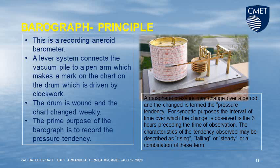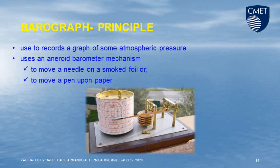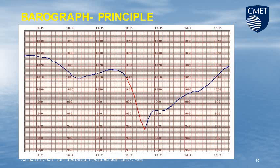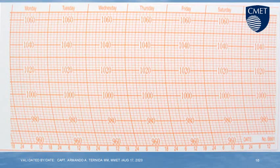For synoptic purposes, the interval of time over which the change is observed is the 3 hours preceding the time of observation. The characteristic of the tendency observed may be described as rising, falling, or steady, or a combination of these terms. A barograph records a graph of atmospheric pressure and uses an aneroid barometer mechanism to move a needle on a smoke foil or to move a pen upon paper. This is the photo presentation of a barograph.